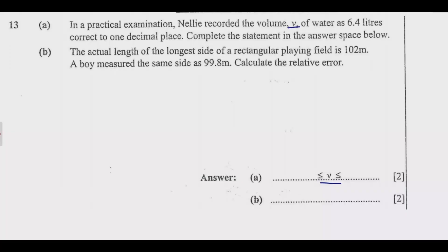If the volume V is recorded to be 6.4 liters, we need to look for which numbers, when expressed to 1 decimal place, would give us 6.4. The range will give it to 2 decimal places, such that this volume will fall within that range. The lowest number, in such a way that when you round it to 1 decimal place to give us 6.4, should be 6.35.